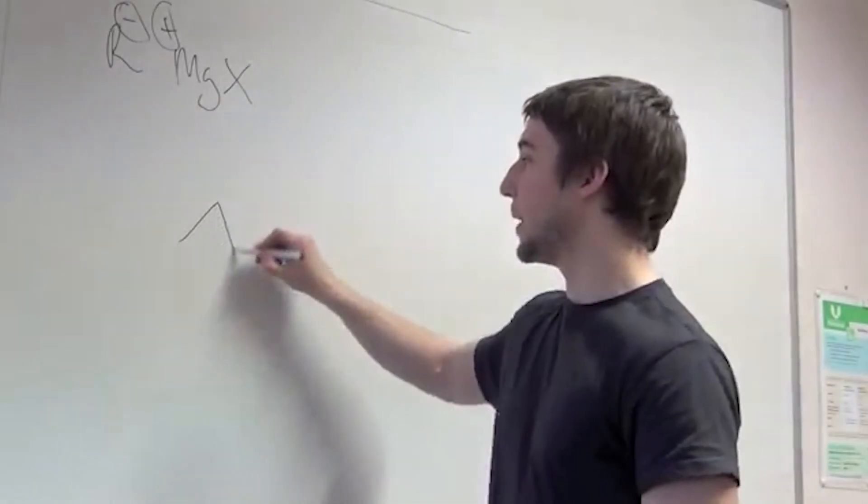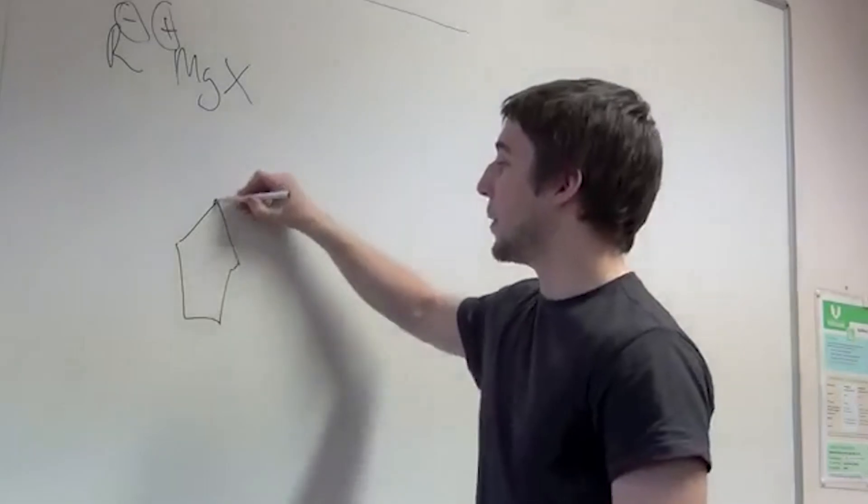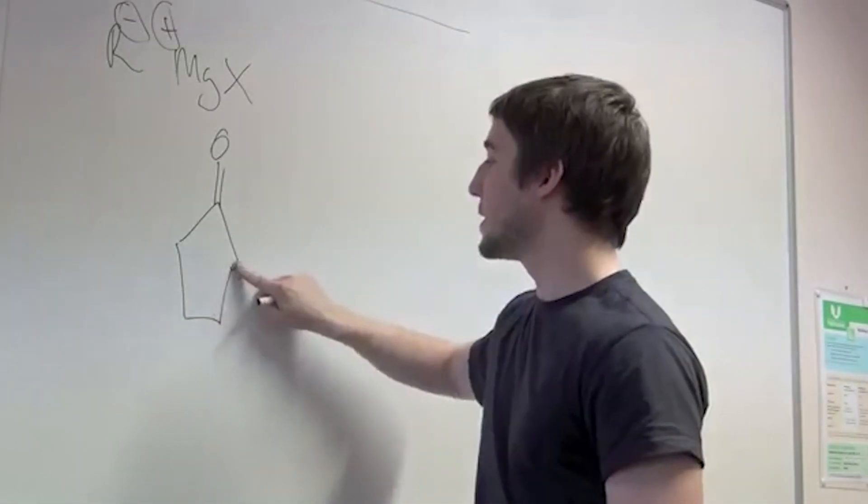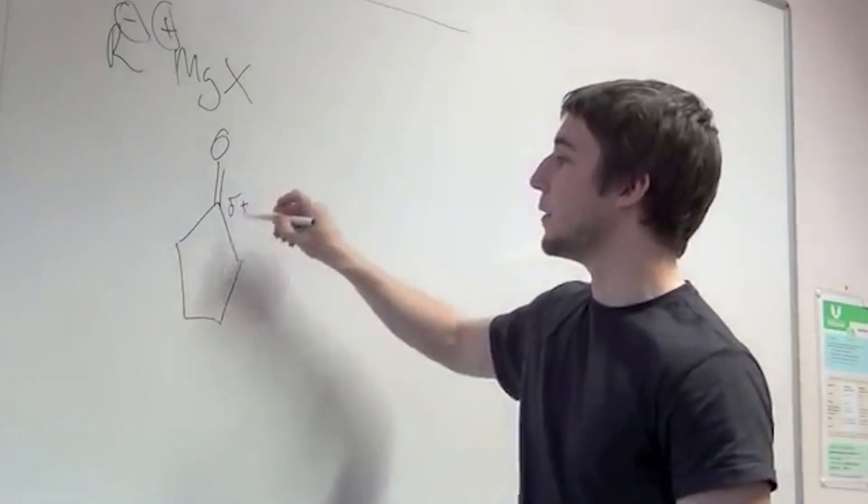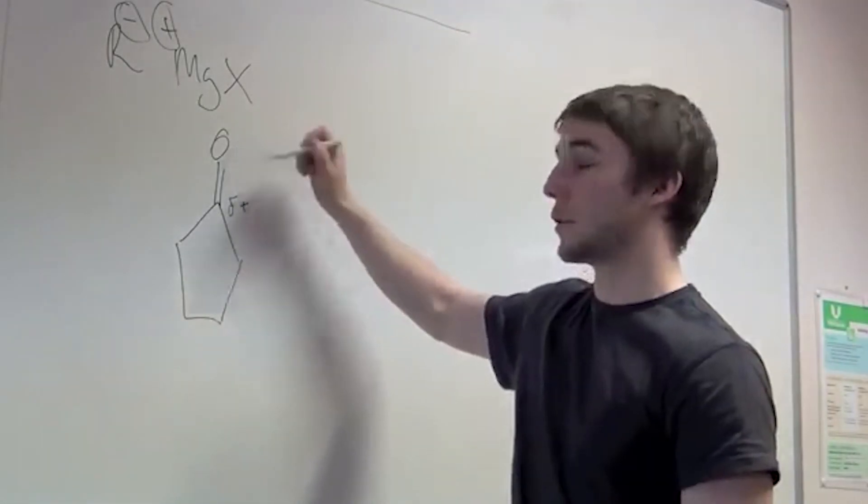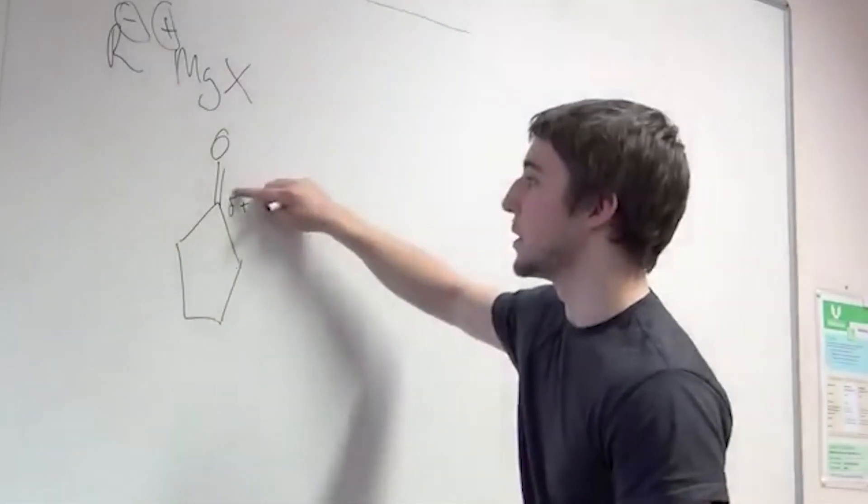If we have this molecule with a carbonyl functional group, we can see that this carbon will be slightly positive due to the fact that the carbonyl oxygen is attracting the electrons in this double bond.